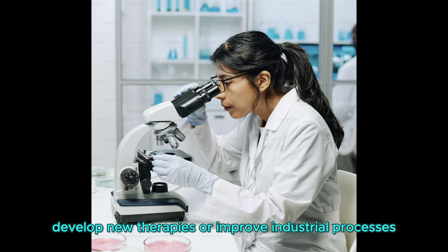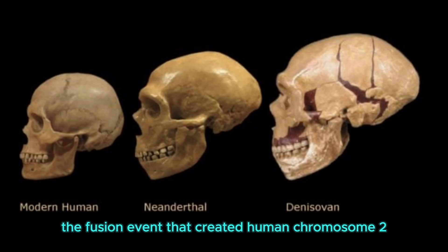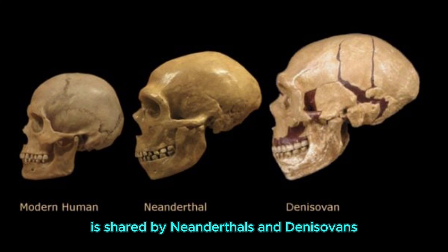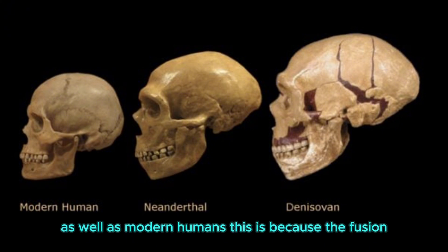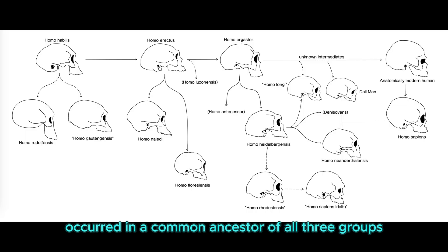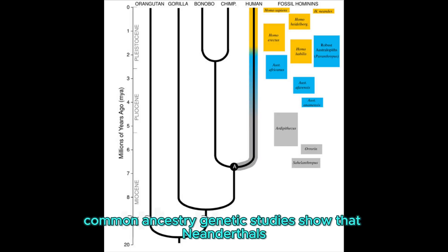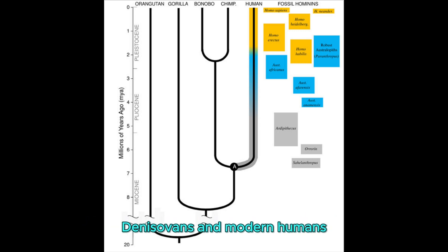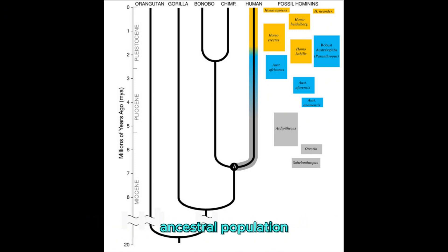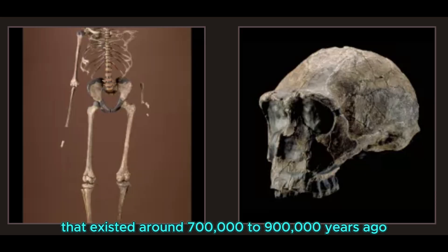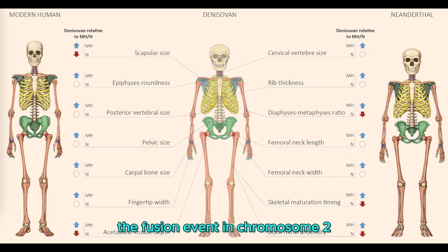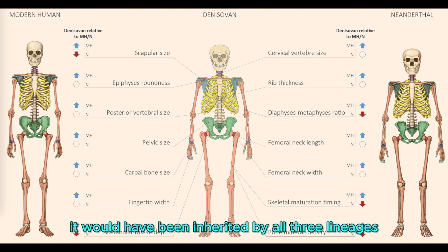The fusion event that created human chromosome 2 is shared by Neanderthals and Denisovans, as well as modern humans, because the fusion occurred in a common ancestor of all three groups. Genetic studies show that Neanderthals, Denisovans, and modern humans all descended from a shared ancestral population that existed around 700,000 to 900,000 years ago. The fusion event in chromosome 2 predates this divergence, meaning it would have been inherited by all three lineages.